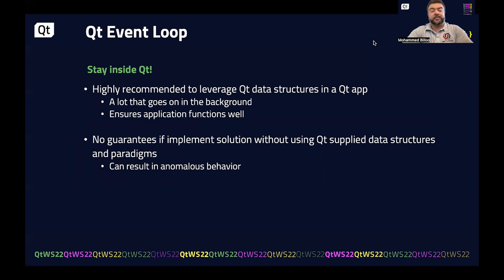One important thing about the Qt event loop is that because it is a thorough framework, it's important to stay inside the framework itself. We try as much as possible to leverage Qt data structures in a Qt app. There may be cases where we need custom C++ data structures to fit business logic, but it's generally best practice to use Qt data structures as much as possible, ensuring the application functions well.